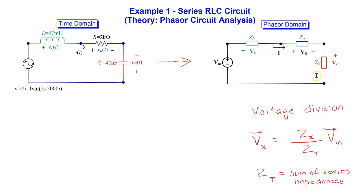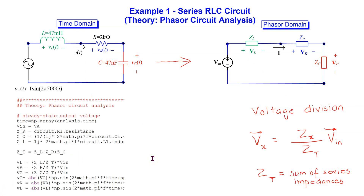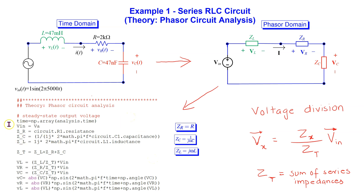The voltage across any of these impedances can be calculated using this general formula, where ZT is the equivalent series impedance given by the sum of the impedances. For convenience, we define the phasor with respect to the sinusoid written as a sine function. We calculate the impedances, then calculate the phasor voltages using voltage division, and finally transform the voltages back to the time domain.